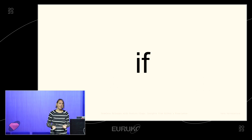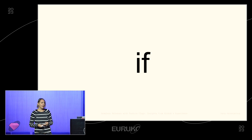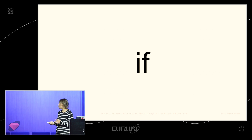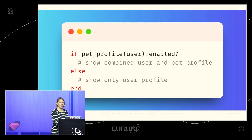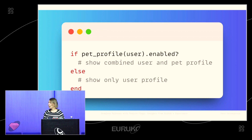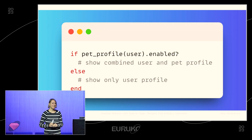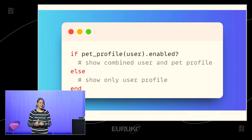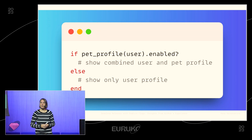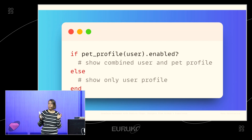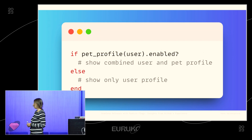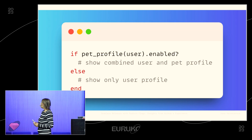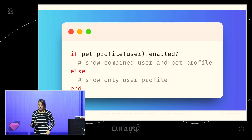Feature flags are basically an if statement. The concept is simple — you make a branch with old and new behavior. For example, for a fictional GitHub feature: let's say developers like pets and want to showcase them to their friends. GitHub could implement a new feature where next to your profile, you have your pet profile. In the simplest way, you have an if statement: if this pet profile is enabled for a user, show the combined user and pet profile; otherwise show just the user profile.